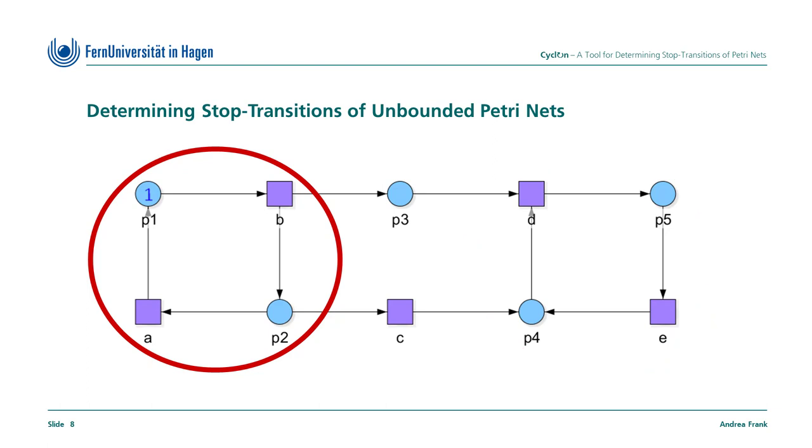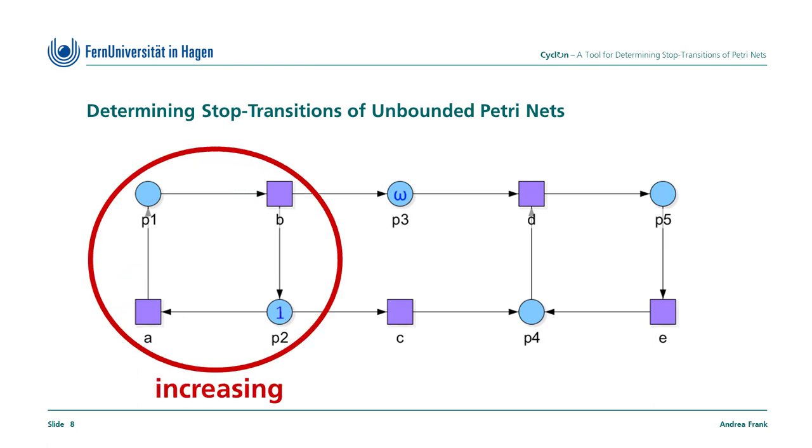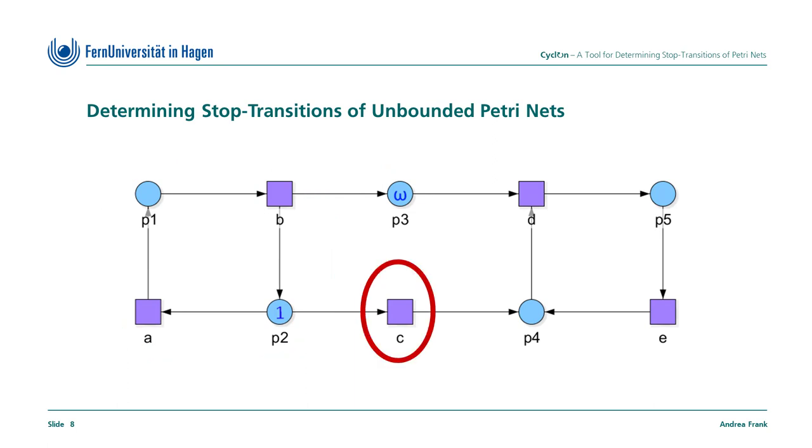First, focus on the left part of the net. The occurrence sequence AB can occur infinitely. Repeated firing of A and B leads to more and more tokens on the place P3. Therefore, this cycle has an increasing effect. By firing transition C, activity can be shifted to the other side of the Petri Net.